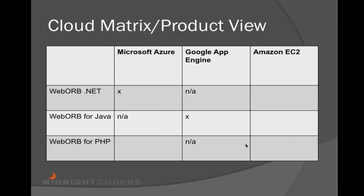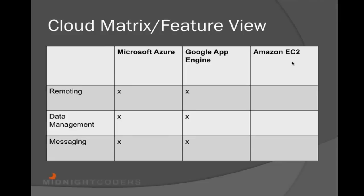Once we have addressed other needs — specifically EC2 for all backends and Azure for PHP — we will be scheduling additional webinars to give you an overview of how these products and cloud environments can be integrated together. There's another cloud matrix for the feature view. Remoting, data management, and messaging are available with Web Warp for .NET in the Microsoft Azure environment, and all three are available in Google App Engine for Java. As soon as we have built Web Warp for .NET and PHP for Amazon EC2, we'll be putting X's in those cells as well.